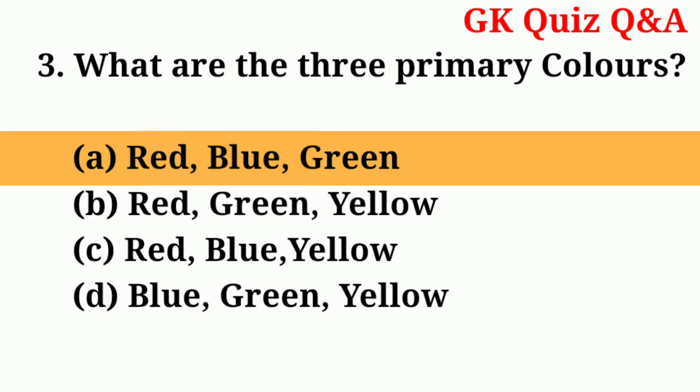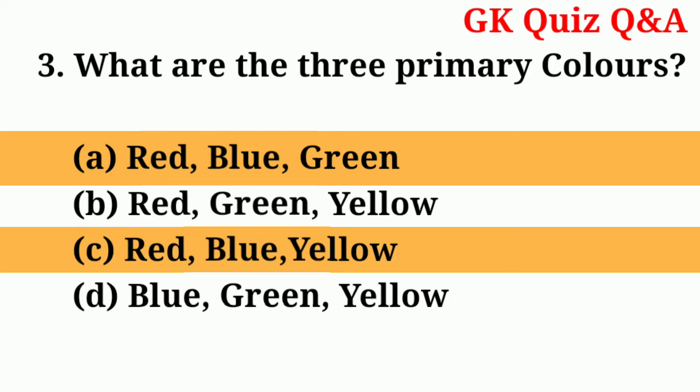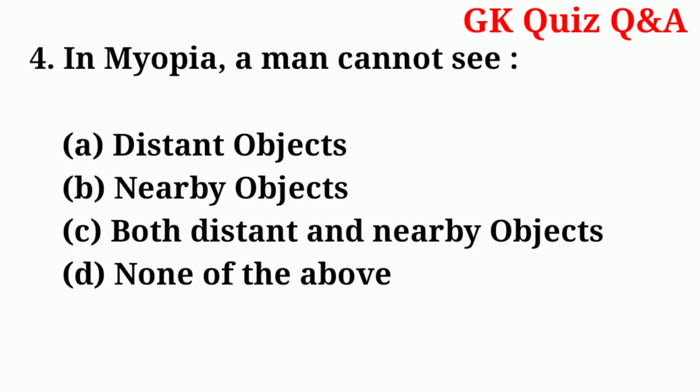Answer: number A — red, blue, green. If option A is not given in the answer, then it will be number C — red, blue, yellow. Number four: in myopia, a man cannot see —